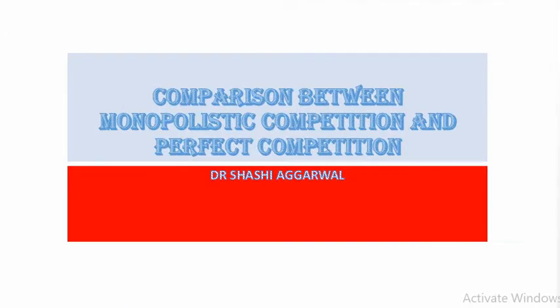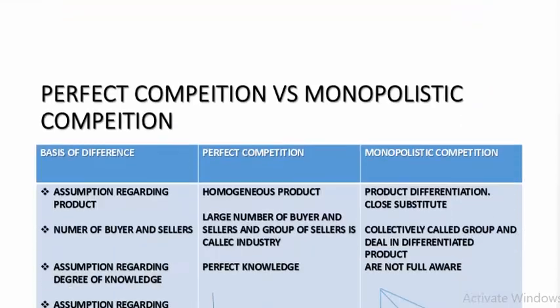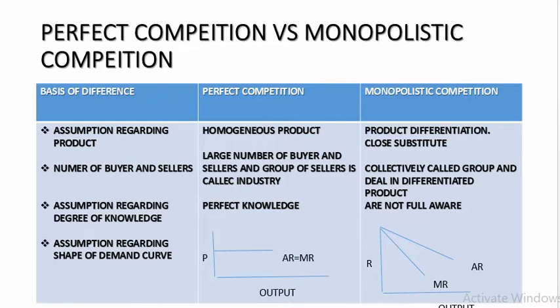Now we will cover the comparison between monopolistic competition and perfect competition. Assumption regarding the product: in perfect competition the product is homogeneous; under monopolistic competition the product is a close substitute — product is differentiated. Number of buyers and sellers: in perfect competition, large number — the group of sellers is called the industry; under monopolistic competition, large number — but the group of sellers is called a group and they deal in differentiated products. Regarding the degree of knowledge, buyers in perfect competition have perfect knowledge; under monopolistic competition they are not fully aware, so selling cost has to be incurred.